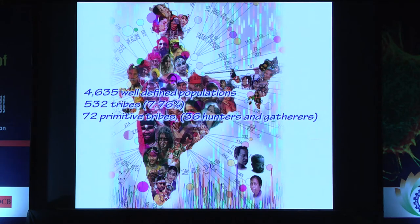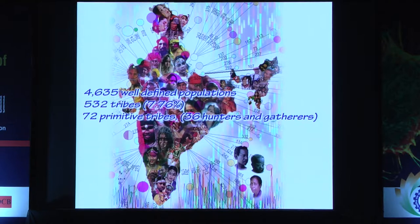Some groups look like Europeans, some groups look like South East Asians, and some groups don't look like anybody — they are unique to India. In India we have 4,635 anthropologically well-defined population groups. Nowhere in the world has such huge diversity, which includes tribes and primitive tribes, some of whom still practice a hunter-gatherer lifestyle.